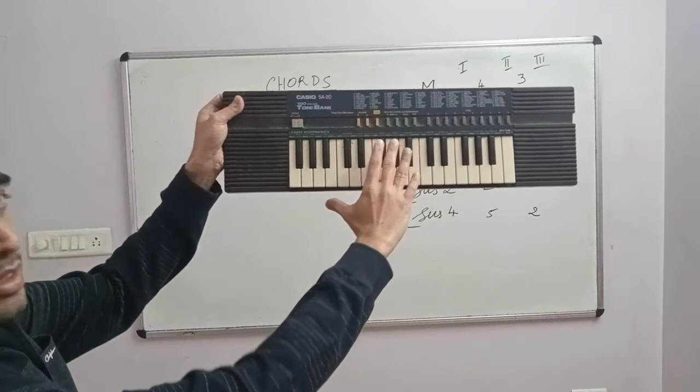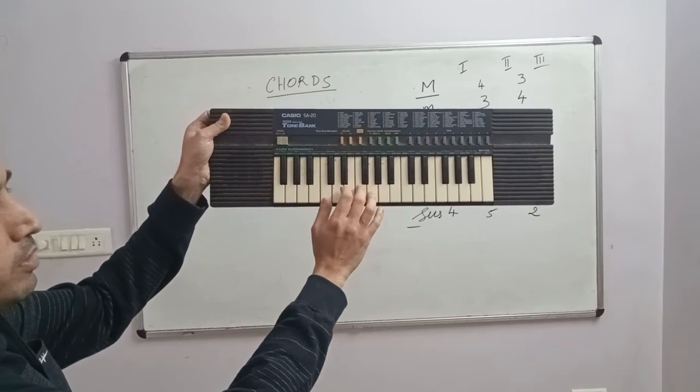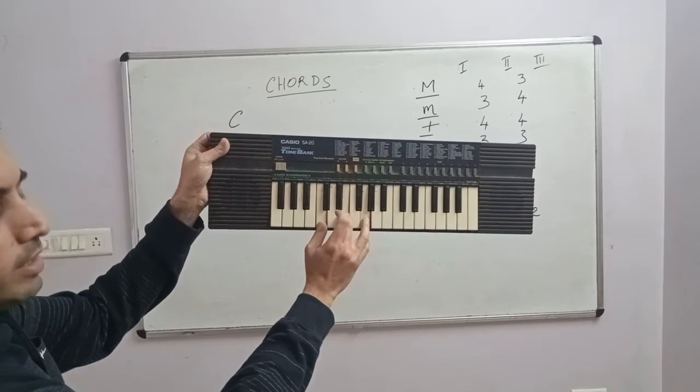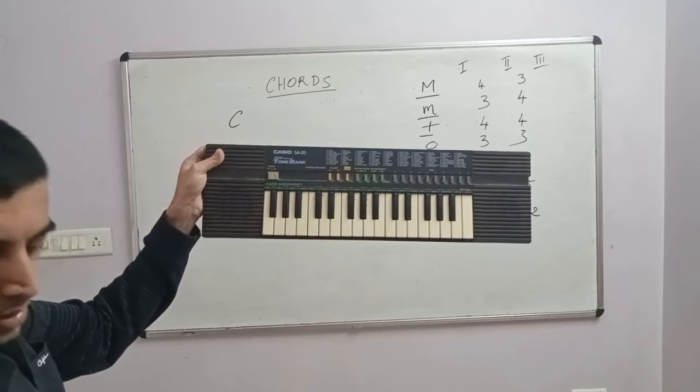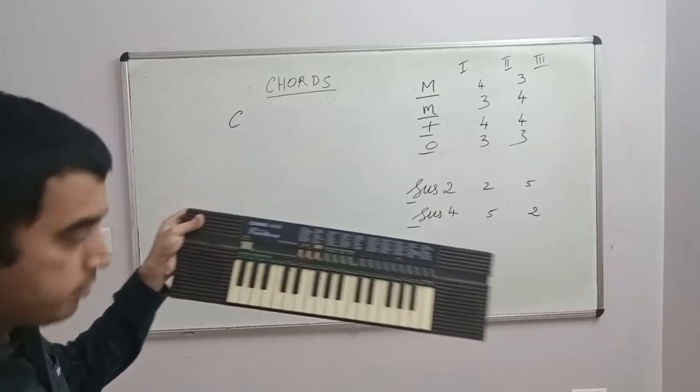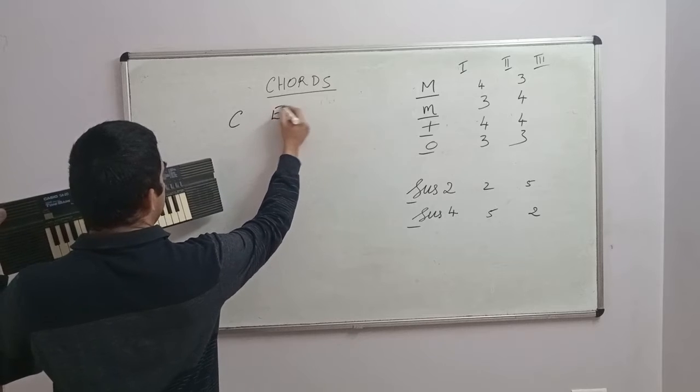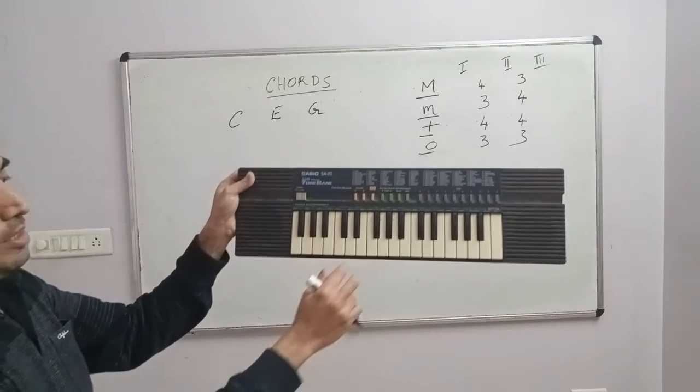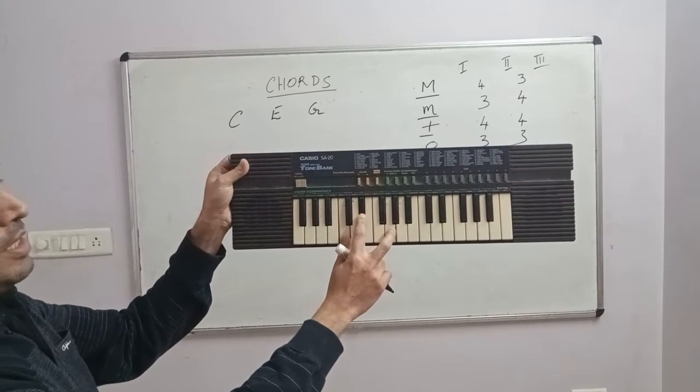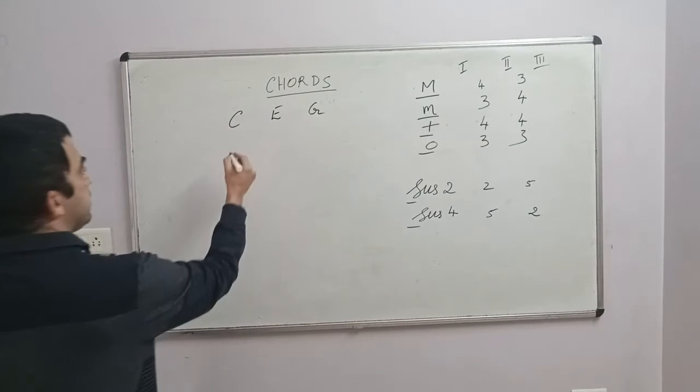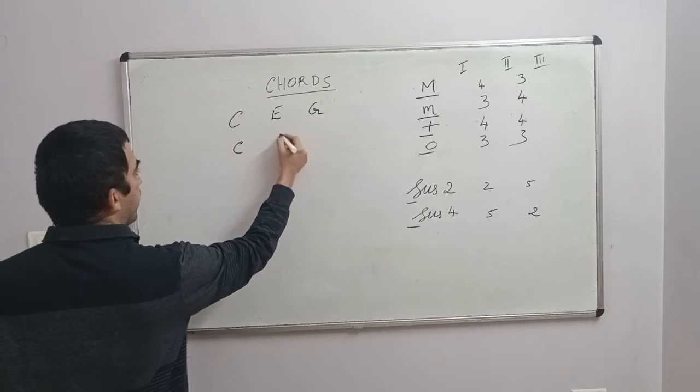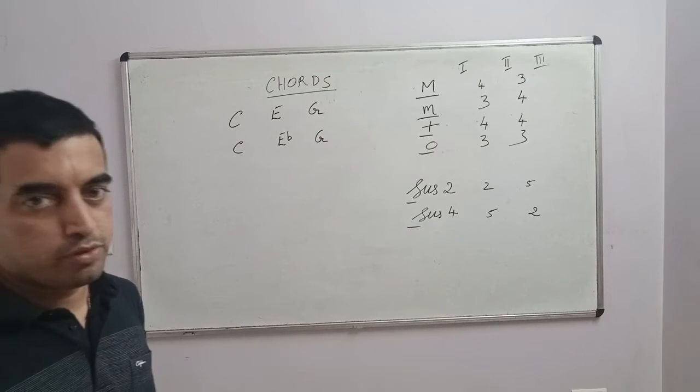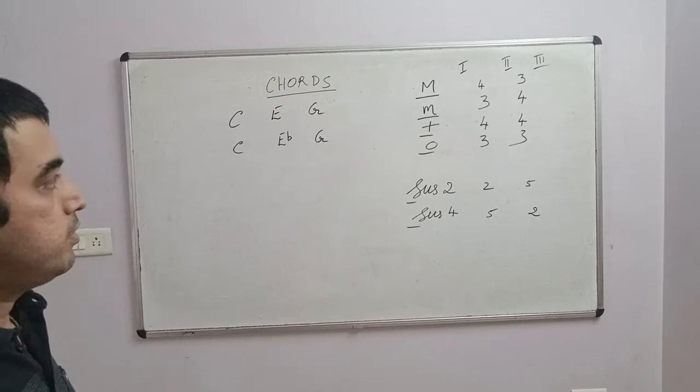I take this keyboard here. All right, two black keys, three black keys, two black keys. Here, C is to the left of the two black keys. C E G because four and three. So the C major chord will be C, E, and G. Whereas C minor will be C, E flat, and G.